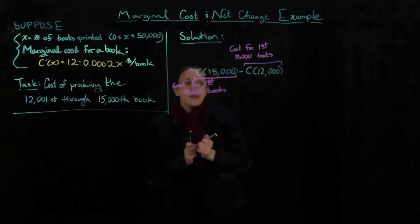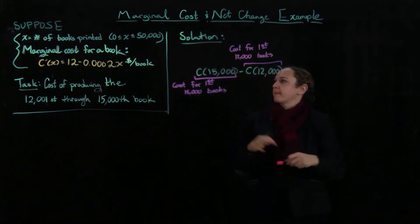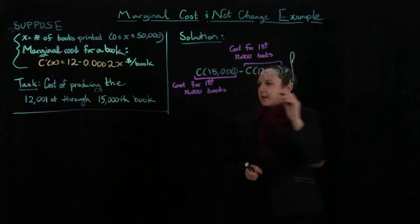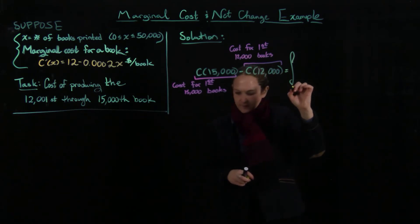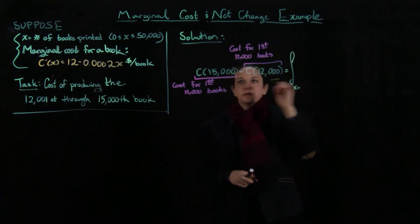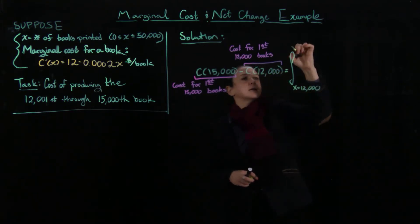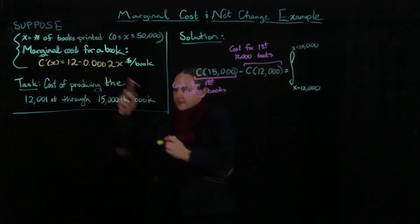And that we know is going to be the integral from x equals 12,000 to x equals 15,000. And then this is where we can put in this marginal cost or this derivative here.